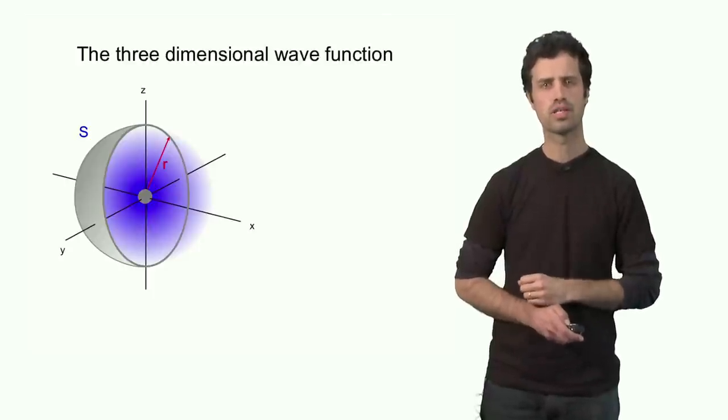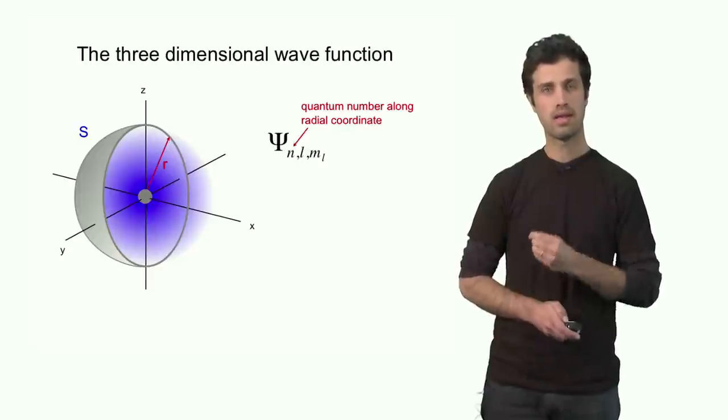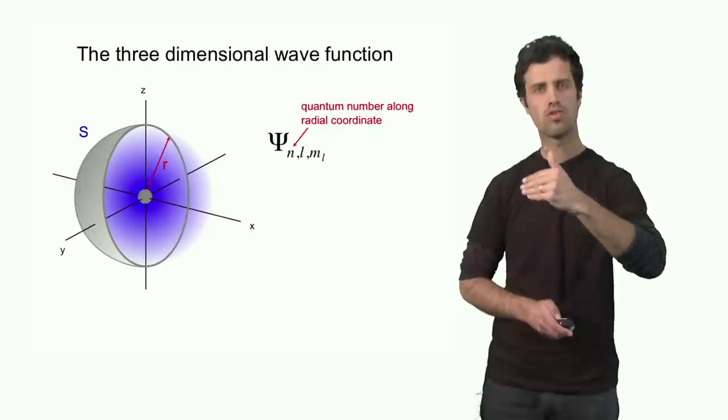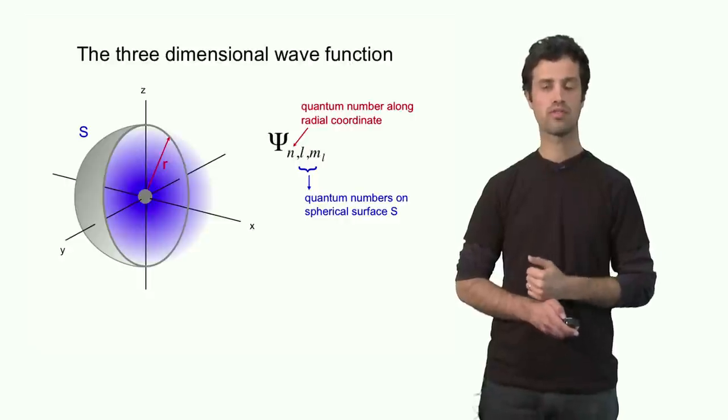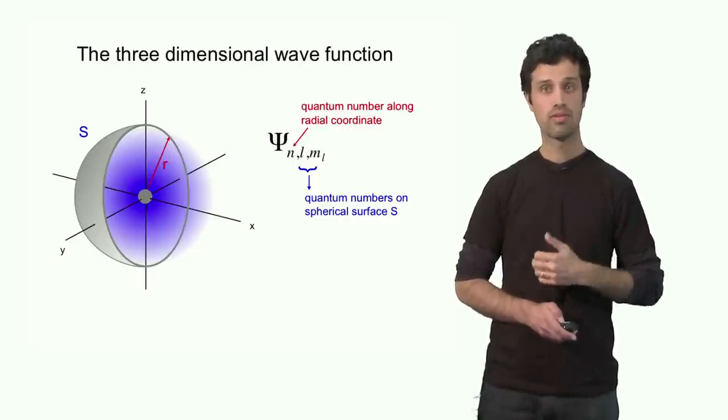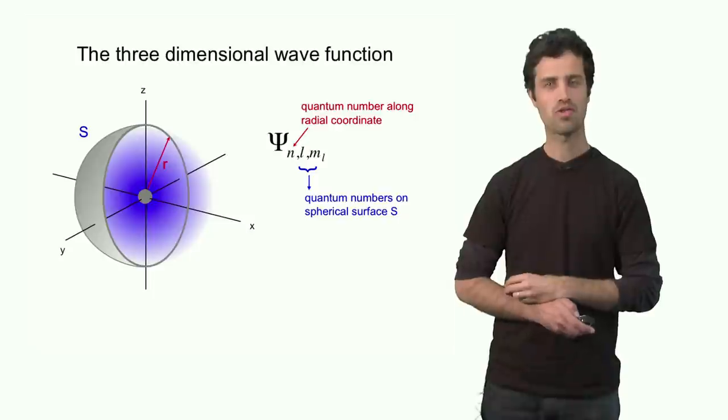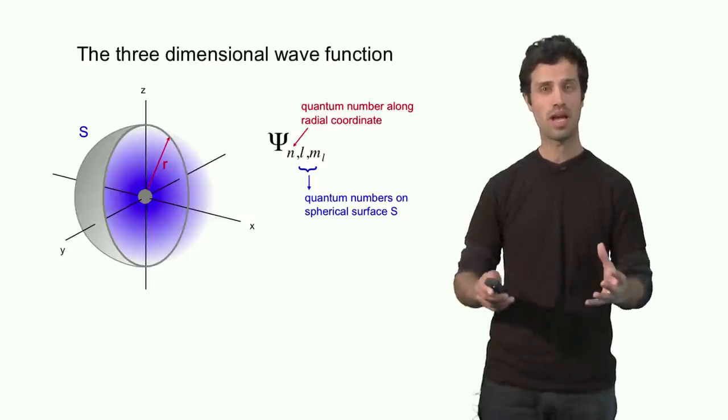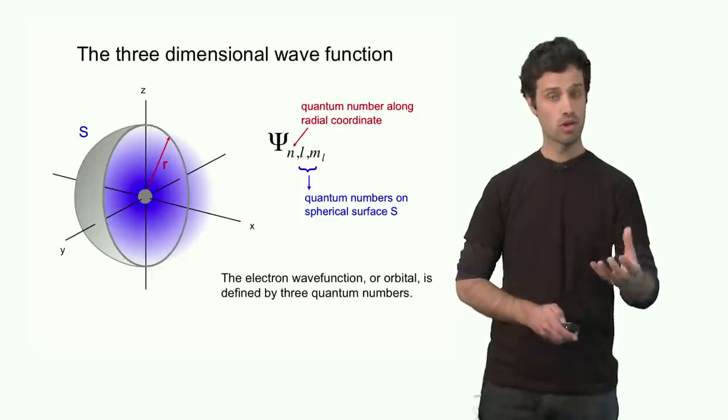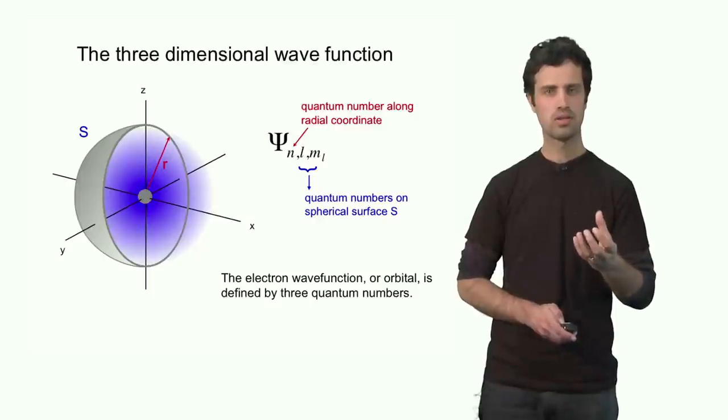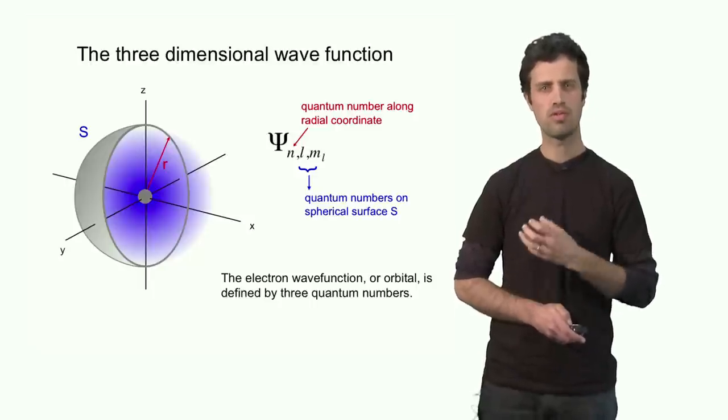The total wave function therefore, psi, has now three quantum numbers. The first one is n. It labels the solution of the wave function along the radial coordinate. The other two, L and ML, label the solutions of the wave function in the dimension of the spherical surface S. So we need two more quantum numbers. That makes a total of three. We need three quantum numbers to fully describe the allowed solutions of the wave function. You can conclude therefore, that the wave function, or the orbital, as it is sometimes called, needs three quantum numbers to be fully described.